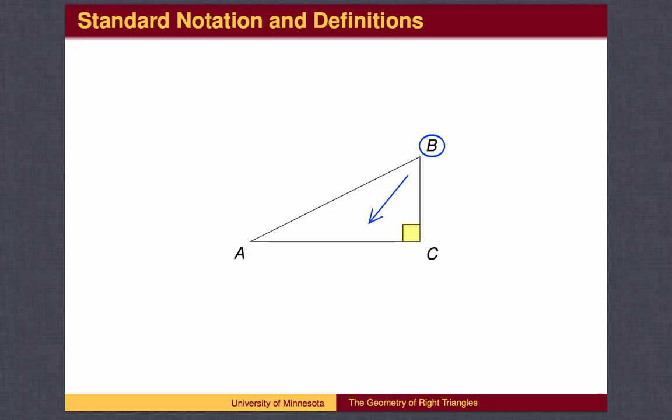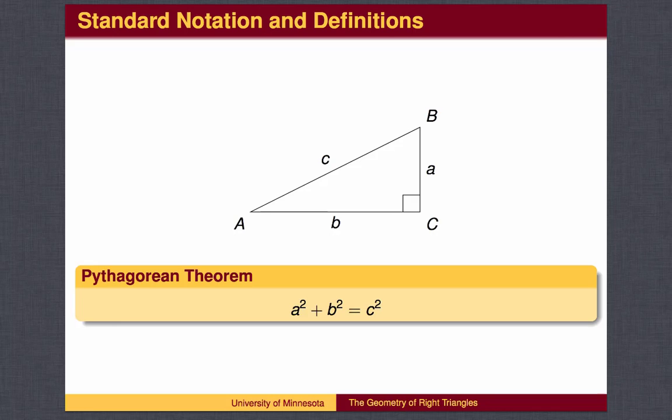For instance, the side connecting point A and point C is called side b. Sides a and b are called the legs, and side c is called the hypotenuse. Recall that given the length of any two sides of a right triangle, we can find the length of the third side by using the Pythagorean Theorem.